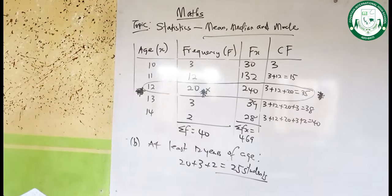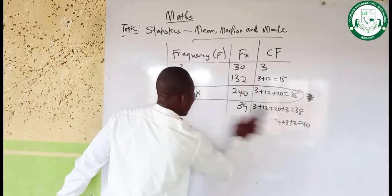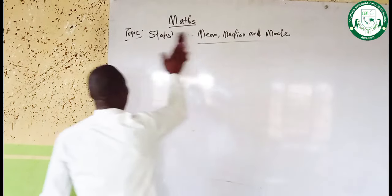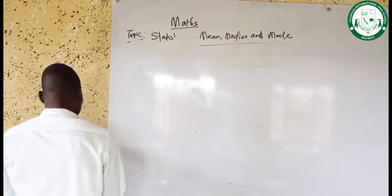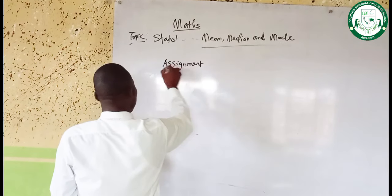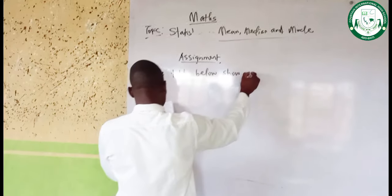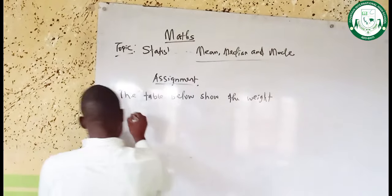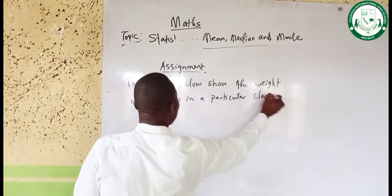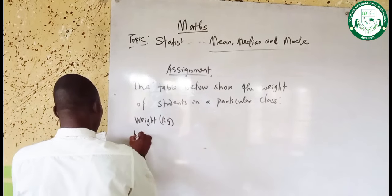So that is all we are going to discuss today. Let's give an assignment. We should not forget that whenever we are talking about grouped data, we are going to use the formula for the median: summation F plus 1 over 2, to find the corresponding position. Now for the assignment, the table below shows the weight of students in a particular class.